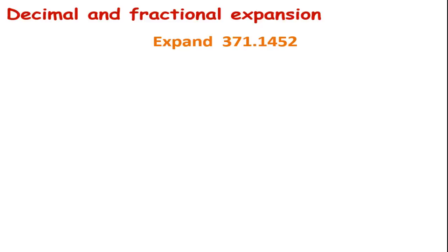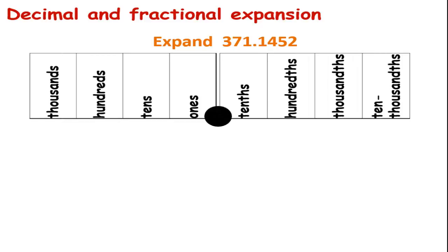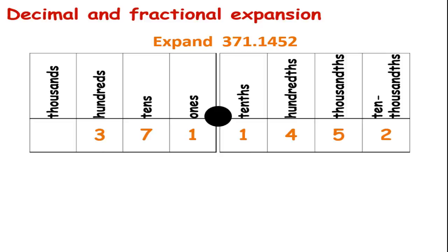One more example will help us understand better. Let's expand the number 371.1452. We will expand this number with the help of a place value chart. The number before the decimal point, 371, is written to the left of the decimal point, and the numbers after the decimal point, 1452, are written to the right.